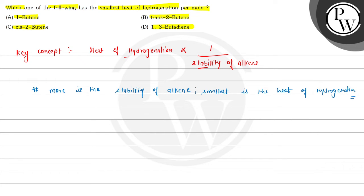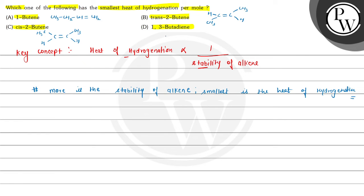Now we can see the structures. 1-butene is CH3-CH2-CH=CH2. Trans-2-butene has C=C with both CH3 groups in opposite directions, and a hydrogen on each carbon. Cis-2-butene has CH3 and CH3 in the same direction. And 1,3-butadiene is CH2=CH-CH=CH2.